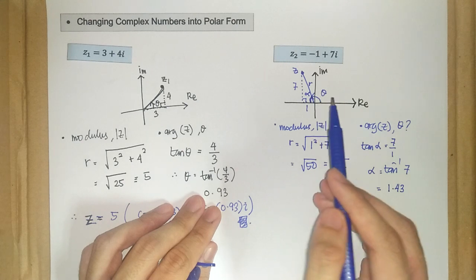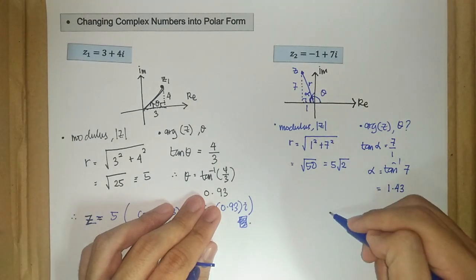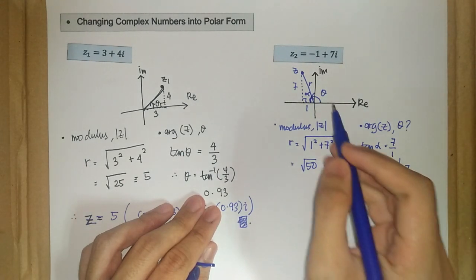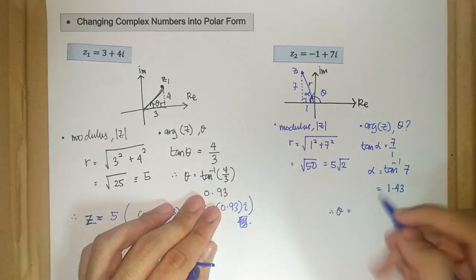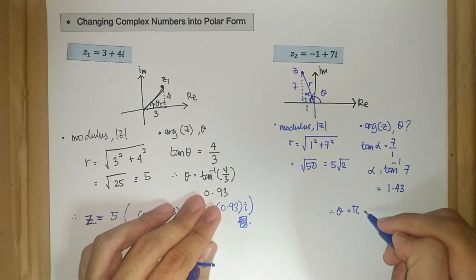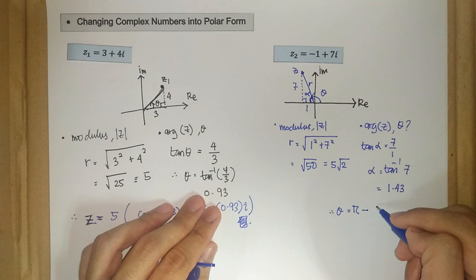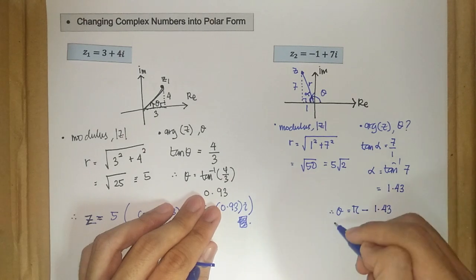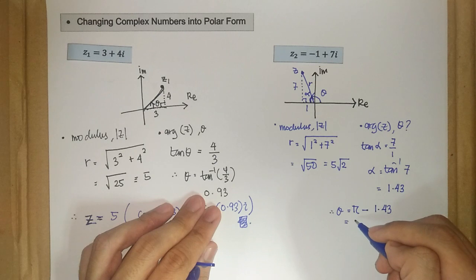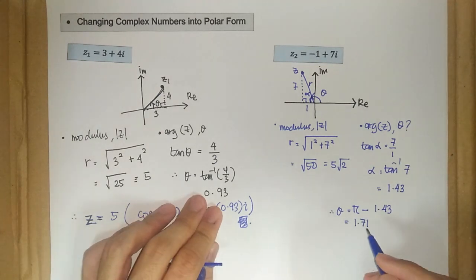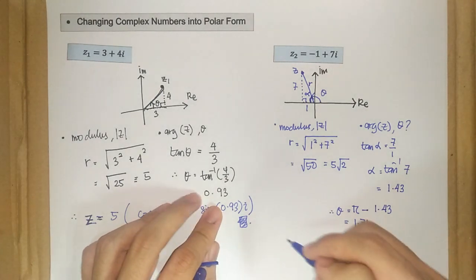argument of z, that is theta. So theta is just the whole angle pi here, 180 degrees minus our alpha. So minus 1.43, which is we get more or less 1.71, up to two decimal points.